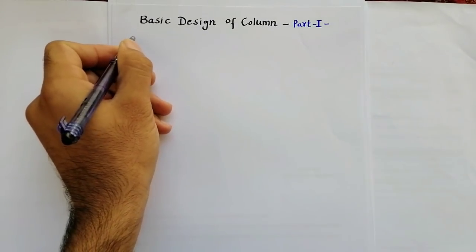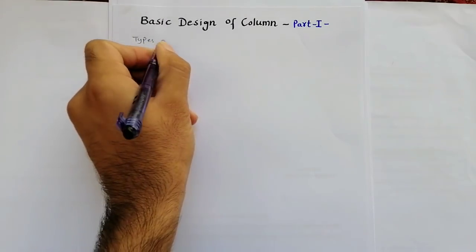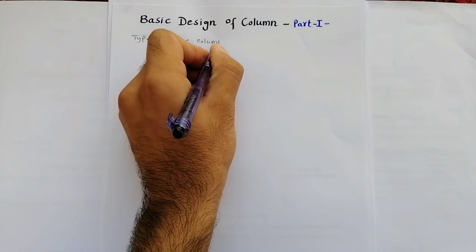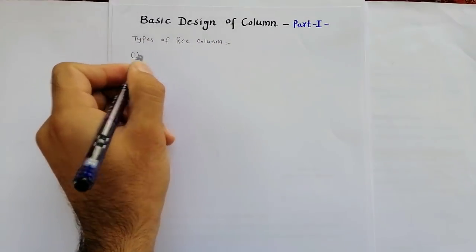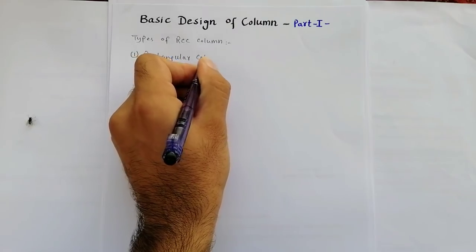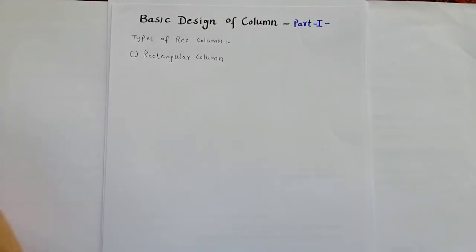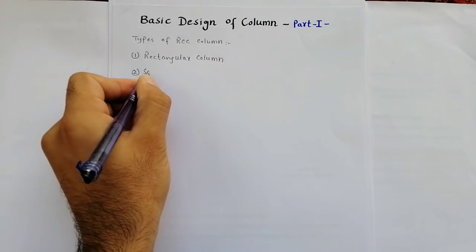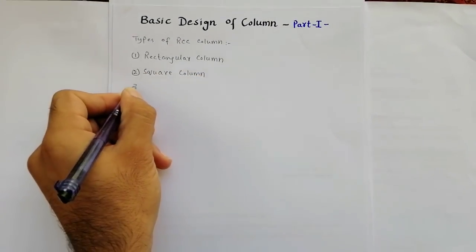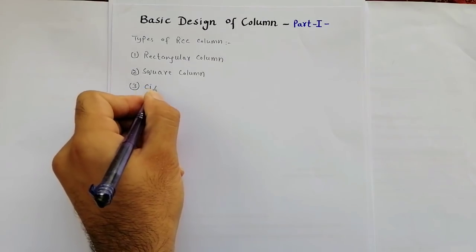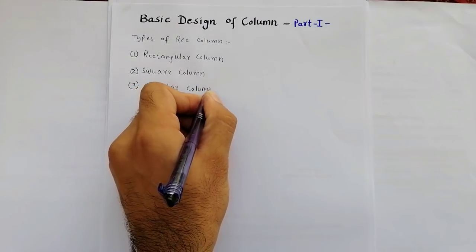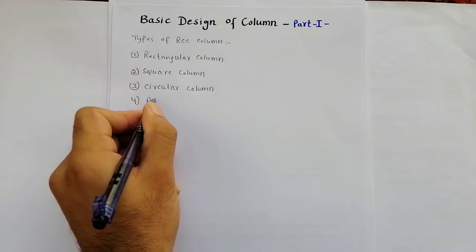Types of RCC column. The first one is rectangular column. The second one is square column. The third one is circular column. And the fourth one is polygonal column.